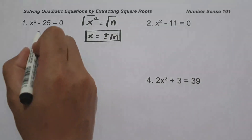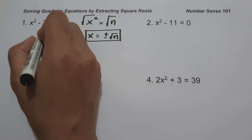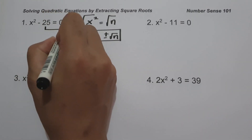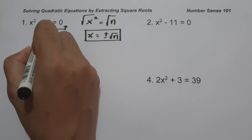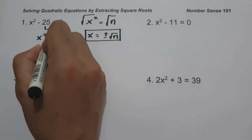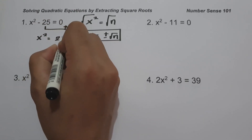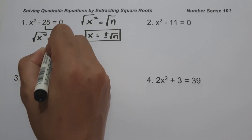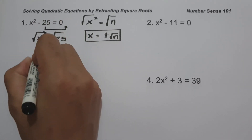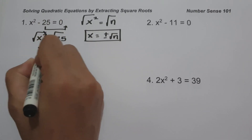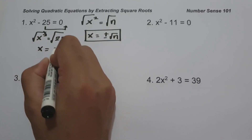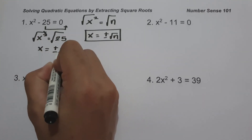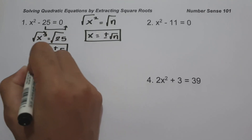On number one, we have x² - 25 = 0. To find the value of x, let us move negative 25 to the other side of the equation. It will give us x² = 25. So let us take the square root of both sides. So x is the square root of 25, that is positive and negative 5, and this will be our answer.